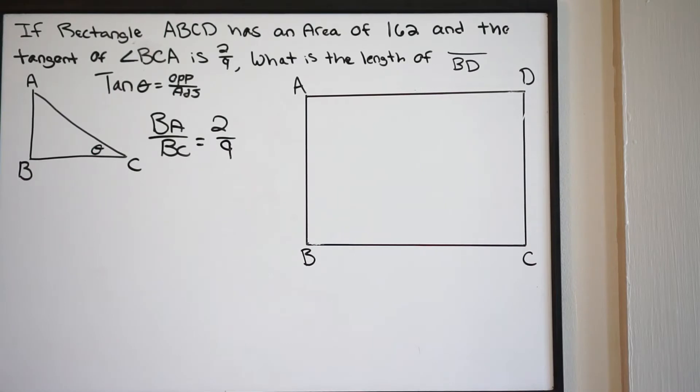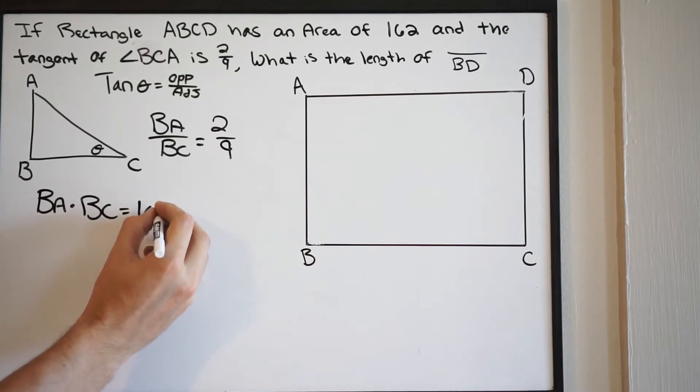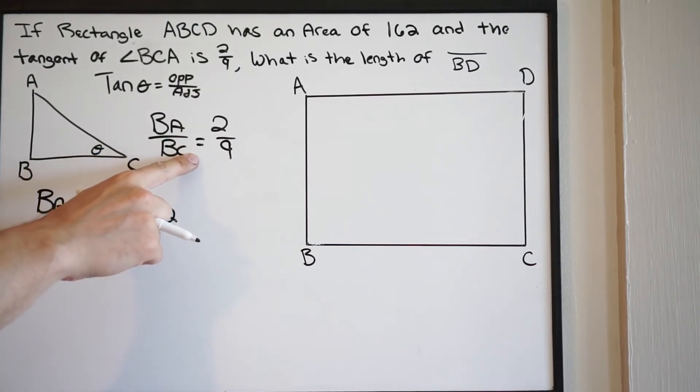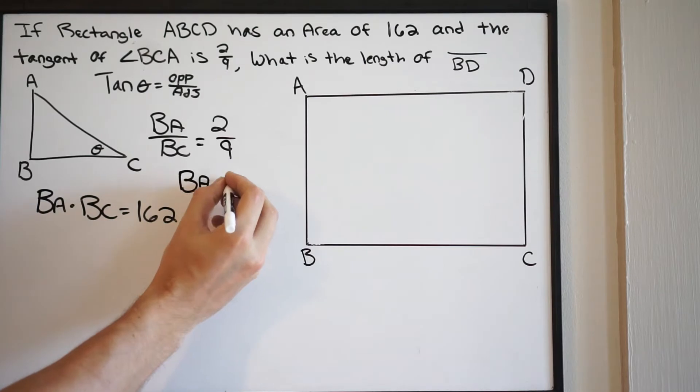What else do we know? We know that this rectangle ABCD has an area of 162. So if I do length BA times length BC, that's going to give me 162. BA times BC equals 162. We can solve this by using substitution. If I solve for BA, I can then substitute it into my equation here. I'm going to multiply both sides by BC. So I'm going to get BA is equal to 2 over 9 times BC.